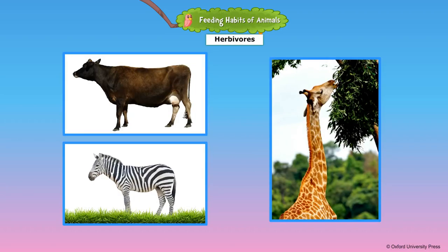Some animals eat only plants. They are called herbivores. Cow, horse, elephant, deer, zebra, and giraffe are examples of herbivores.